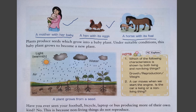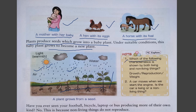Plants produce seeds which grow into a baby plant under suitable conditions. When a seed is sown into soil in the presence of warmth, water, and air, it grows into a plant and then a tree. Question: which of the following characteristics is shown by both living and non-living things — growth, reproduction, or weight? Growth and reproduction are shown only by living things; weight is shown by both living and non-living things, so weight is the answer.